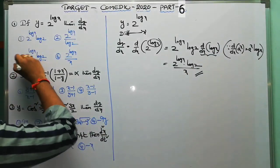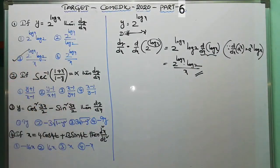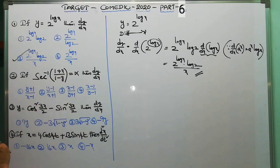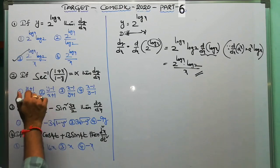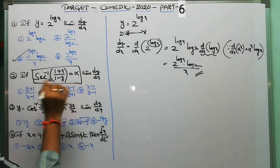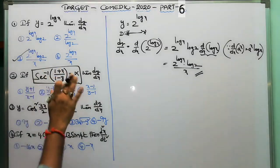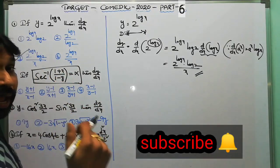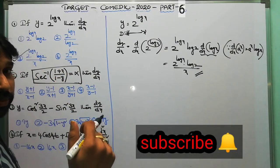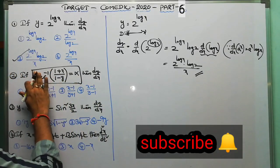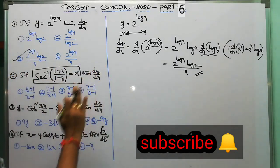Coming to the next question: if sec⁻¹((1+x)/(1-y)) equals α, what is dy/dx? Whenever this kind of question appears, don't apply direct differentiation, because the derivative of sec⁻¹x is 1/(|x|·√(x²-1)), which is complicated. Instead, take sec⁻¹ to the other side: apply secant on both sides.